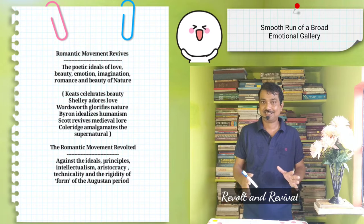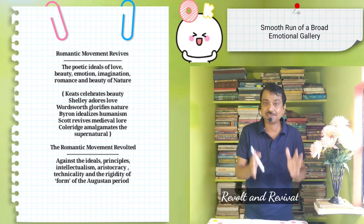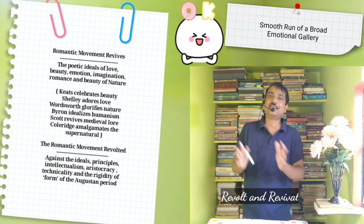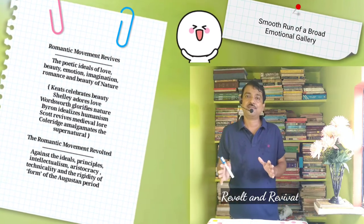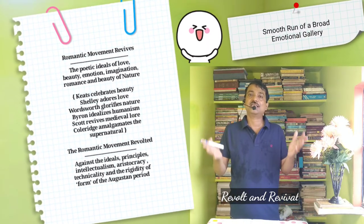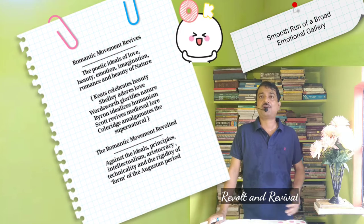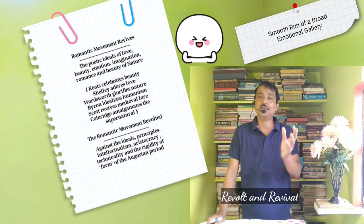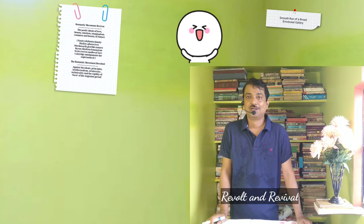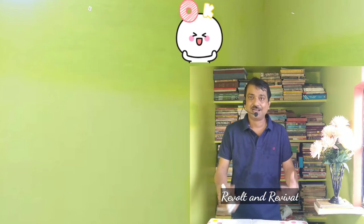As a result, the Romantic movement revolted against the ideals, principles, intellectualism, art, aristocracy, and technicality of the Augustan period, and smoothed the way for a broad emotional gallery of substance. Romantic poetry, in a word, relinquished the rigidity of form that was hampering the very flow of natural poetry.